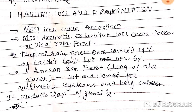The Amazon rainforest, which is known as the 'lung of the planet,' is being cut and cleared for cultivating soya beans and beef cattle. The Amazon rainforest produces 20% of global oxygen, but deforestation for agriculture is harming global oxygen levels.